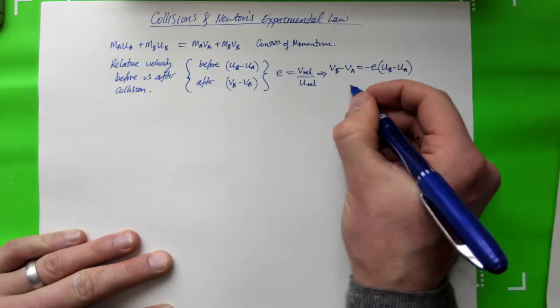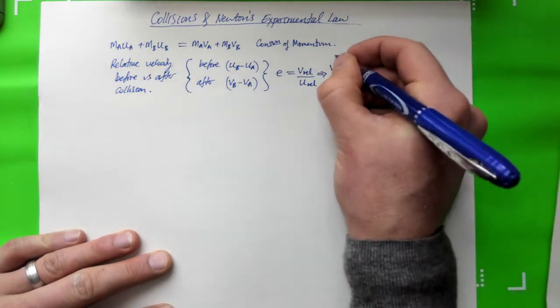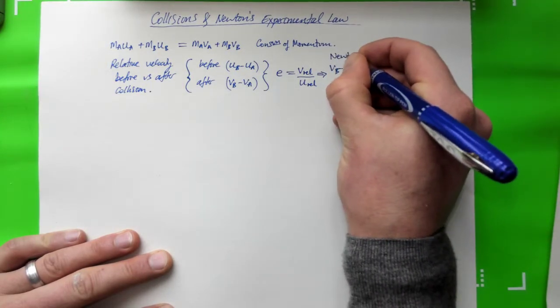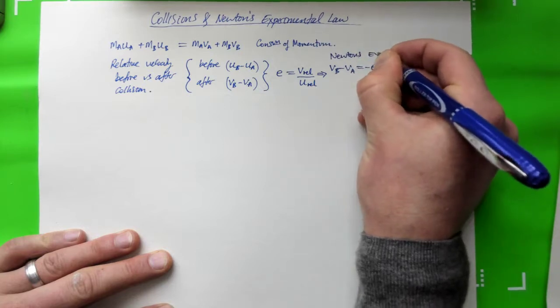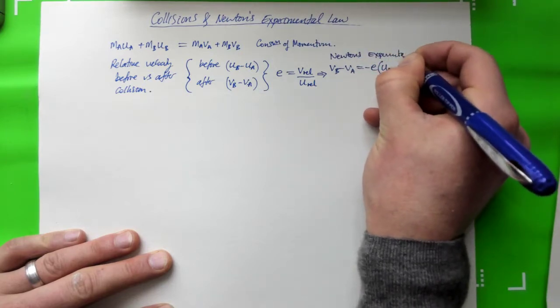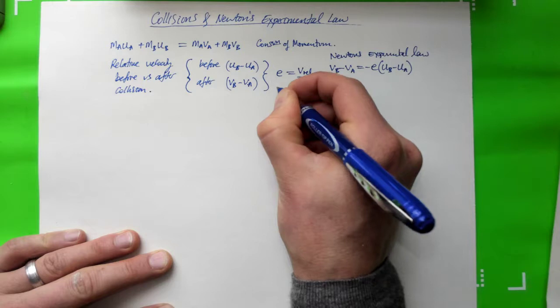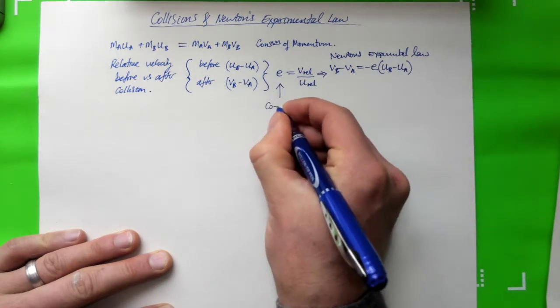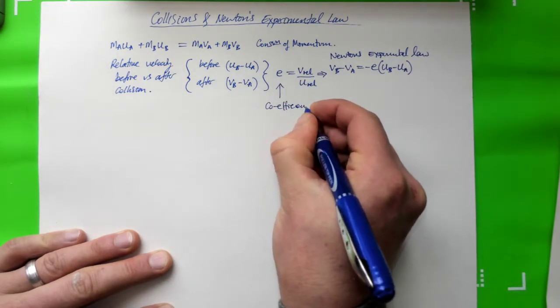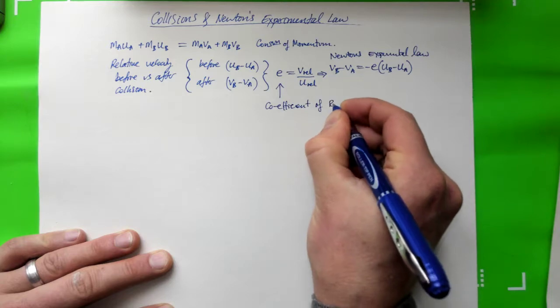And so this thing is called Newton's experimental law, and this thing here is called the coefficient of restitution.